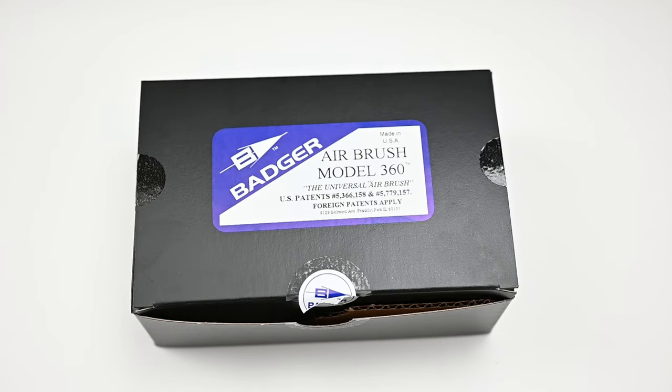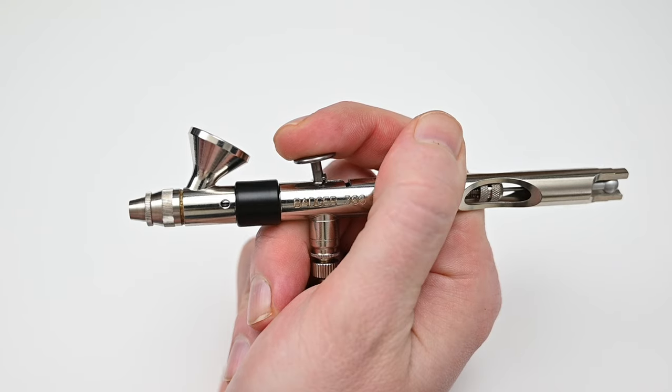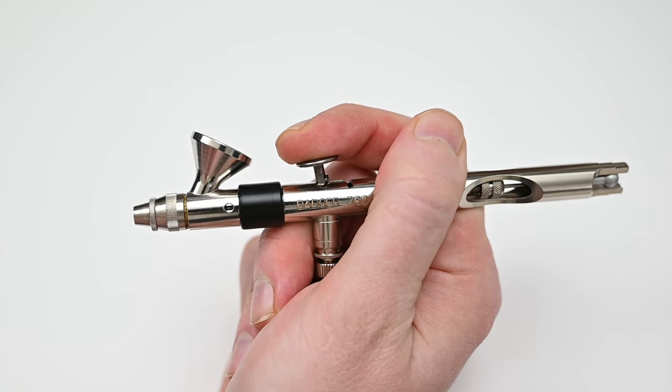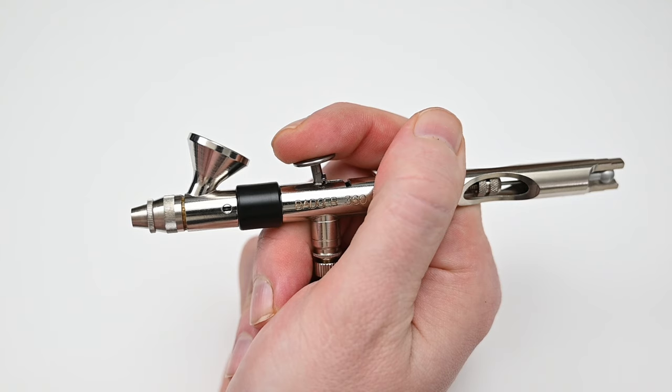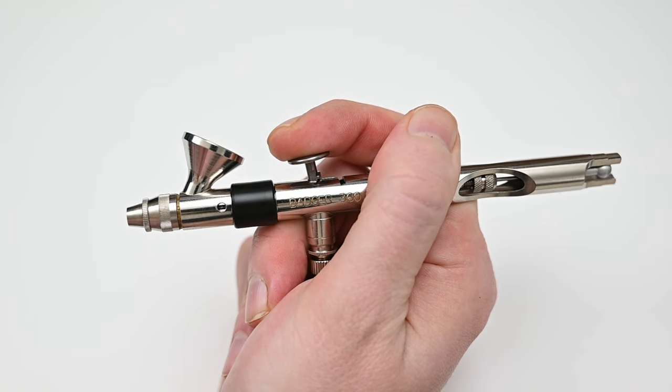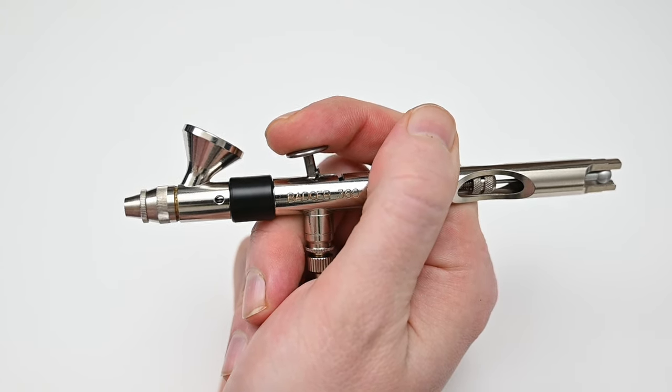Let's take a look at what I would consider to be one of the most innovative airbrushes out today. This airbrush is the Badger 360, and what makes it so special is that it's basically two airbrushes in one, a gravity feed and a siphon feed.